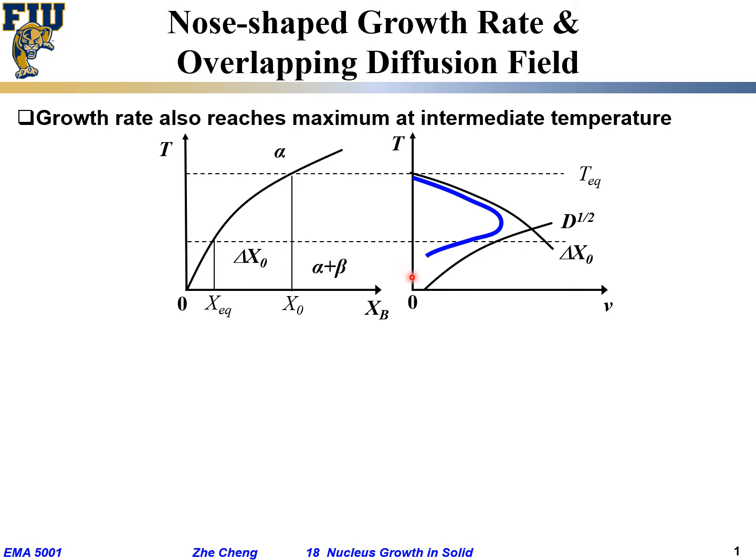On the other hand, when I am here at low temperature, although I have very large supersaturation, I'm grossly oversaturated, I have a large driving force, but I do not have enough diffusion. Atoms are kind of frozen. As a result, the total growth is also very slow.